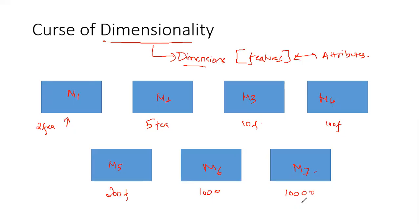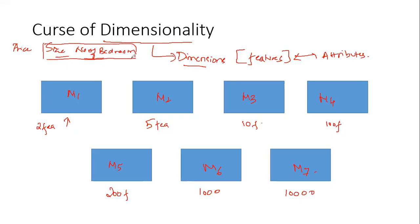Consider a simple example: I want to predict the price of a house based on the size of the house and the number of bedrooms. So I have two independent features and one output feature — price. I'll train model M1 using these two features and get some accuracy, ACC1.